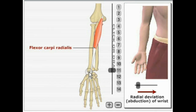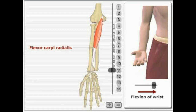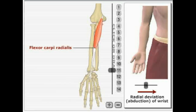Next, we have flexor carpi radialis. It originates on the medial epicondyle of the humerus and inserts into metacarpals number two and three. The actions it performs are flexion of the wrist and abduction of the wrist.